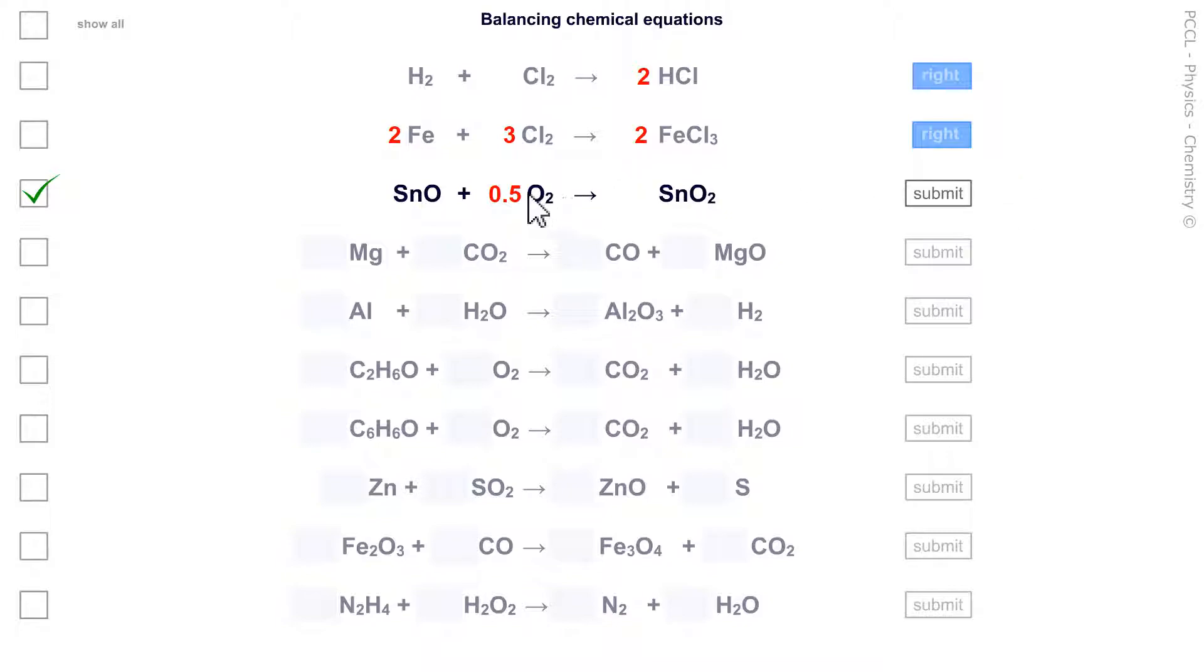I specified that you could also write down 1 half. And if you prefer whole numbers, you'll multiply the whole row by 2. Here's the same equation with only whole numbers.